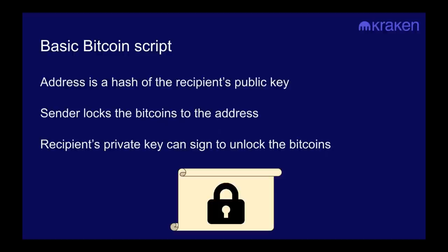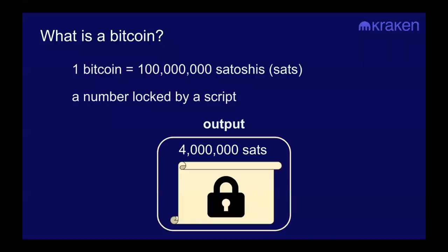The address is a hash of the public key. The sender locks up the Bitcoin to the address using Bitcoin's scripting system, and the recipient's private key can sign to unlock those Bitcoin. To send Bitcoin, you have to unlock them, and when you do send them, you lock them back up — it's an atomic process.